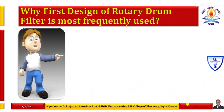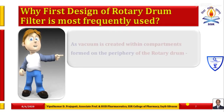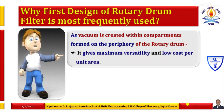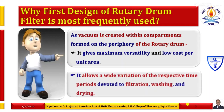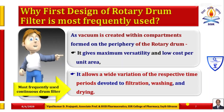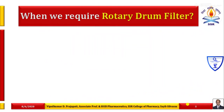The first design of rotary drum filter is most frequently used because vacuum is created within compartments formed on the periphery of the drum. It gives maximum versatility and low cost per unit area, and allows a wide variation of the respective time periods devoted to filtration, washing, and drying steps.